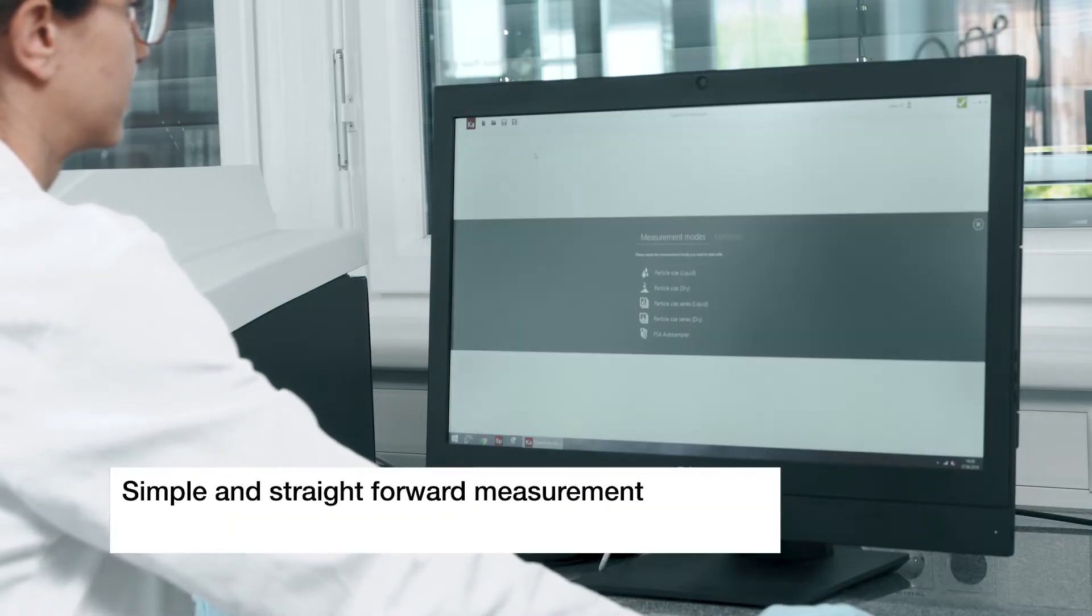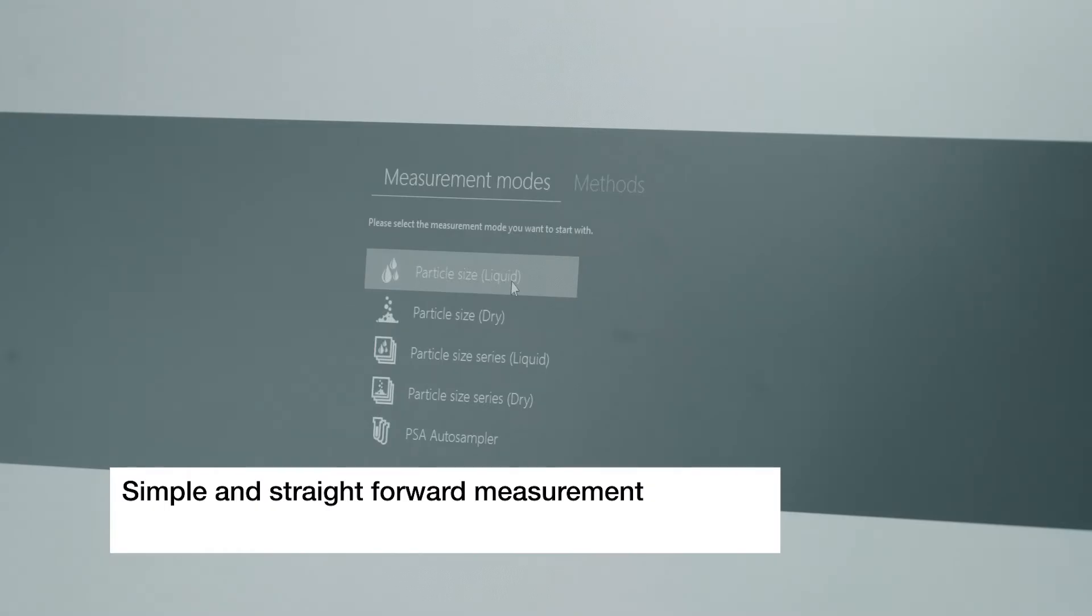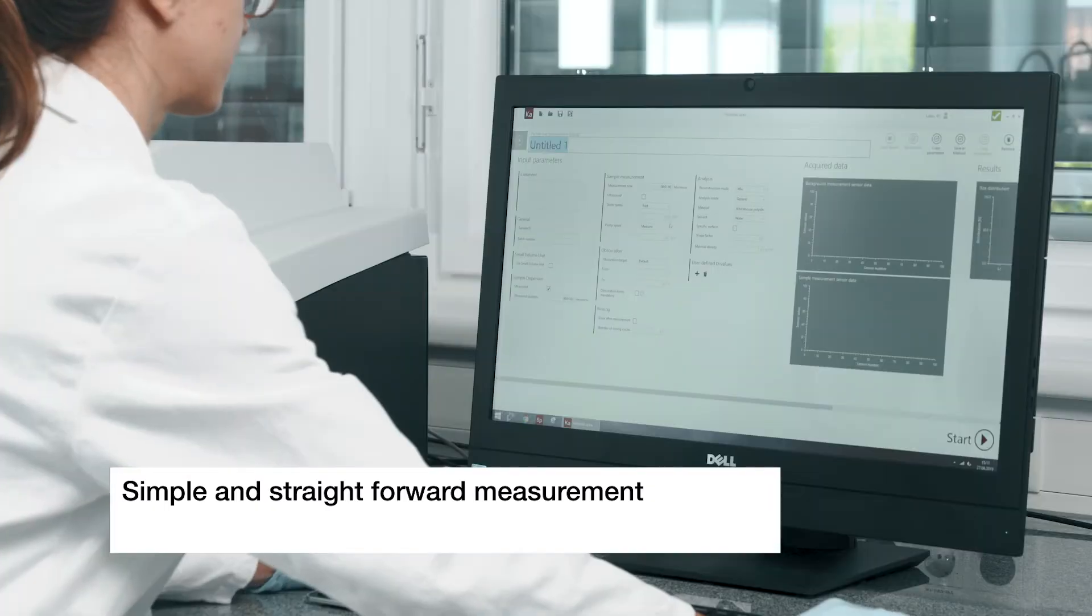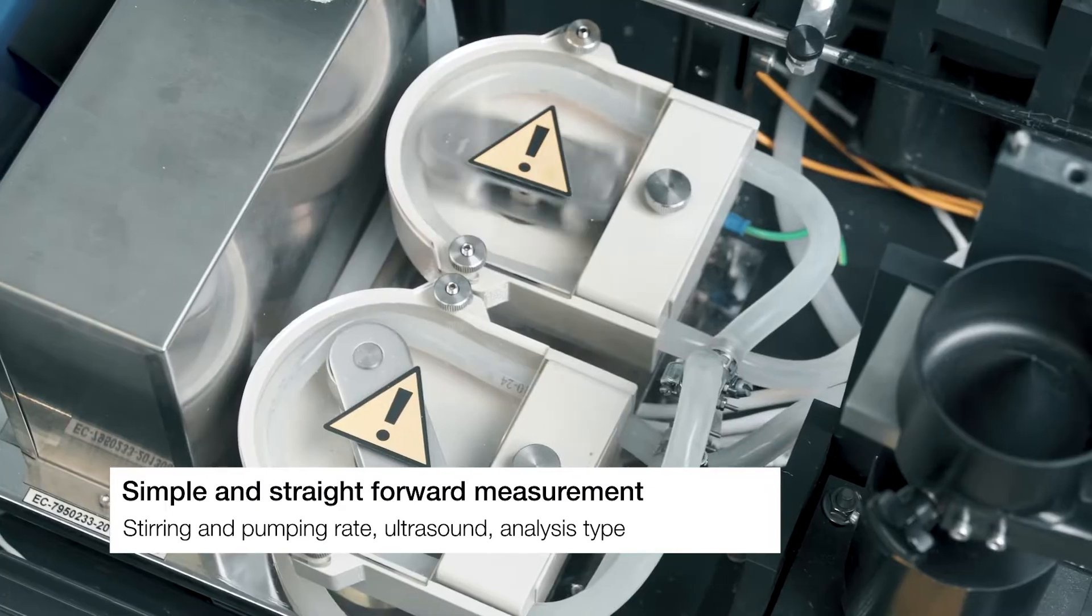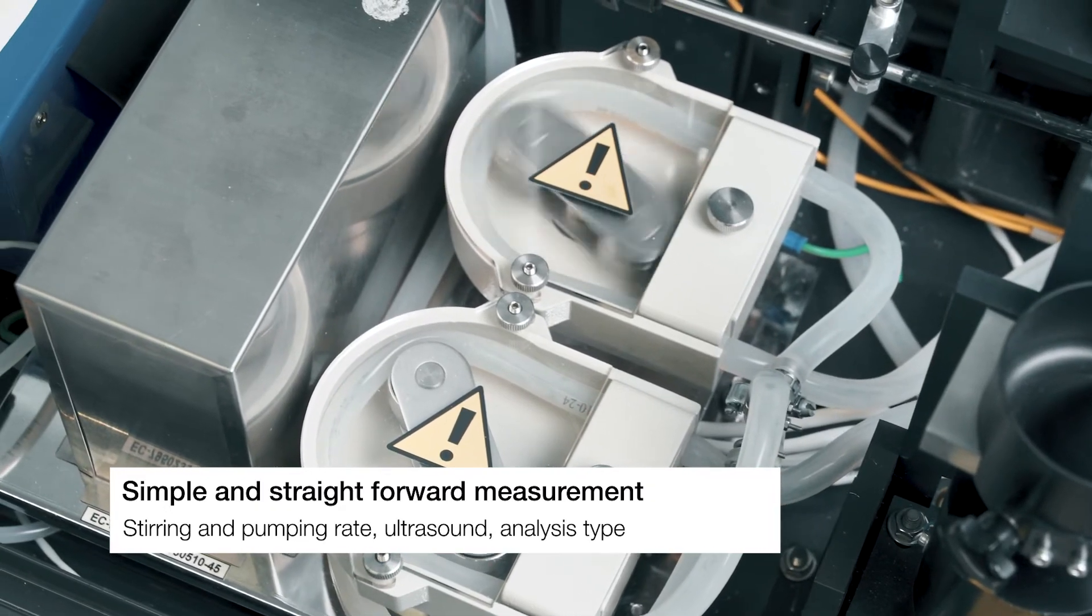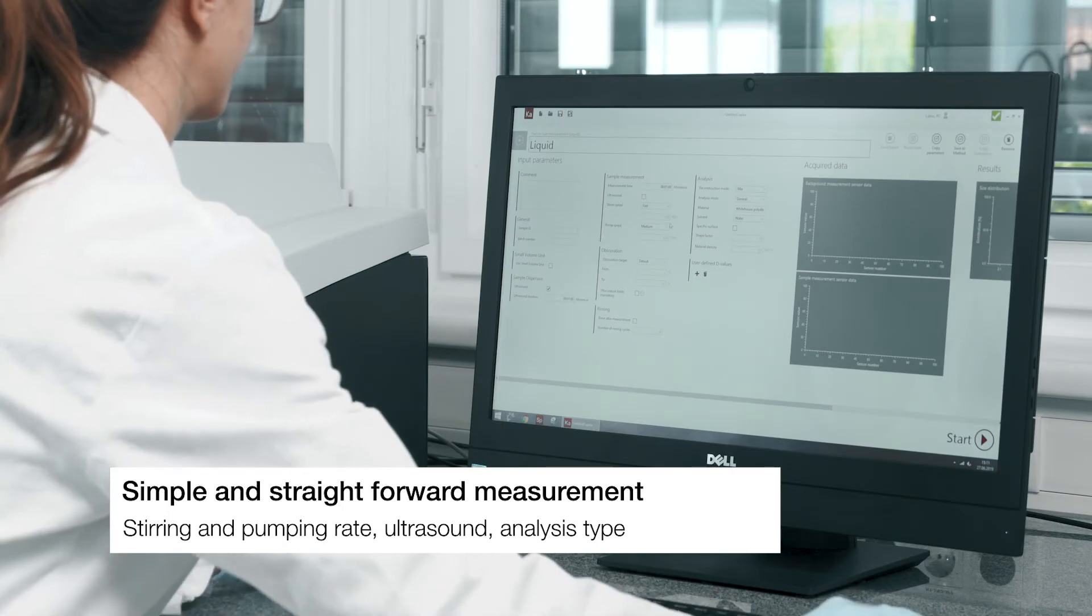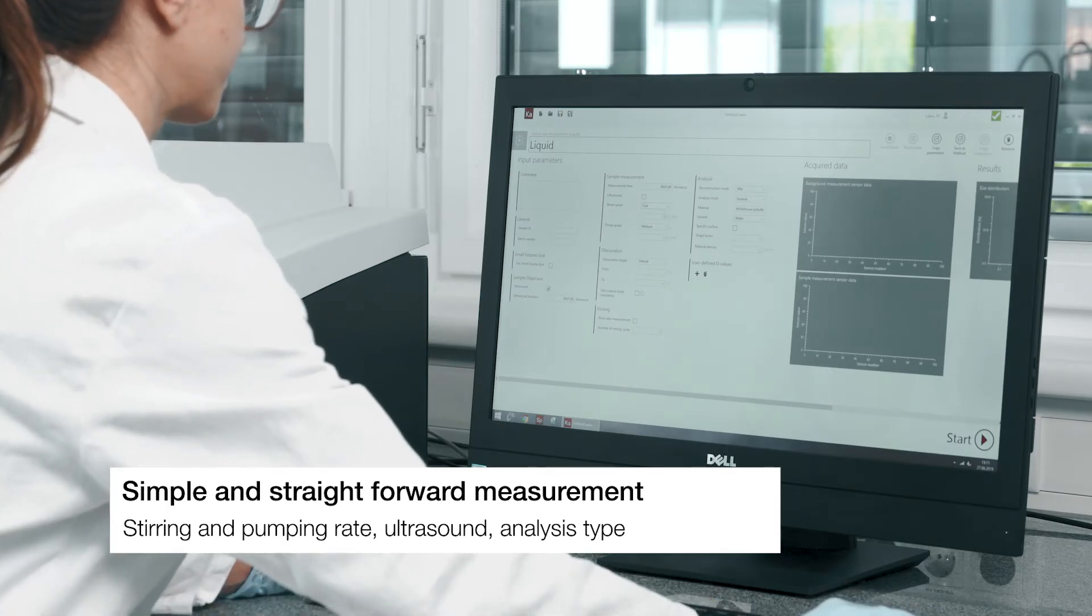The measurement is set by choosing the basic parameters in the Calliope software. Those parameters include dispersion settings like stirring and pumping rates and the ultrasound, analysis type, and others. All of those settings and more are on the same screen, allowing for an easy setup.